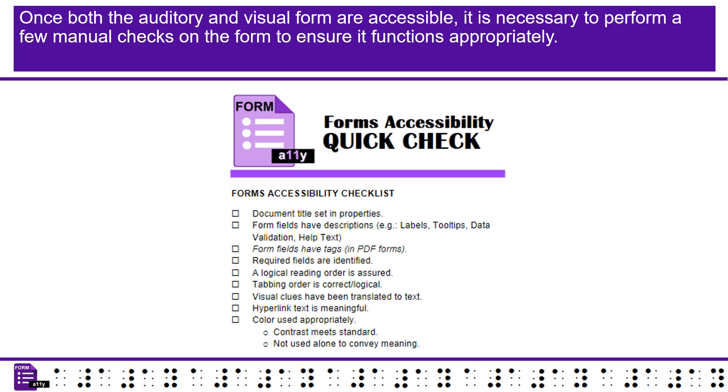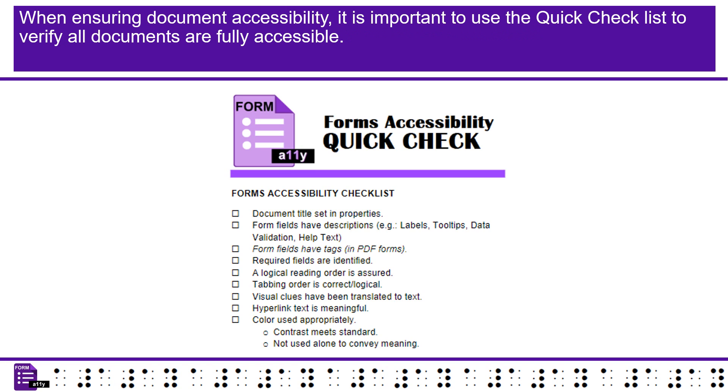Once both the auditory and visual form are accessible, it is necessary to perform a few manual checks on the form to ensure it functions appropriately. When ensuring document accessibility, it is important to use the Quick Checklist to verify all documents are fully accessible.